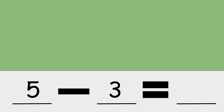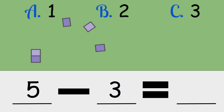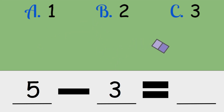Five minus three. Is the answer one, two, or three? Five minus three is two.